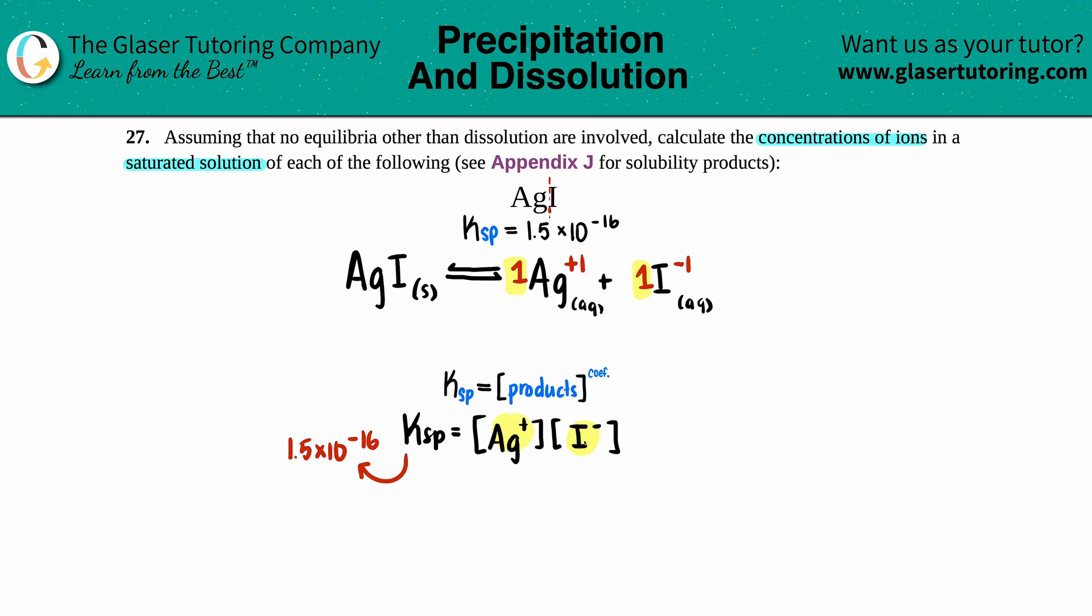We don't know what the concentration of silver and iodine is, so we start making up variables. I go back to my balanced equation and label it as x. I don't know how much Ag⁺ I have, so I'll label it as x (1x because of the coefficient), and since it's one-to-one, this would also be x. Now I have my two variables to plug into my equation. Ag is x and I is also x, so 1.5 × 10⁻¹⁶ equals x times x. x times x is just x².